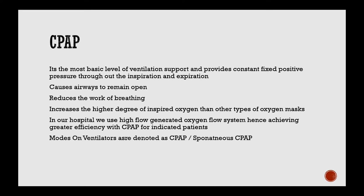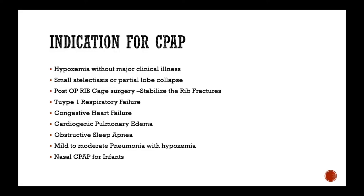In our hospital, we use a high-flow generated oxygen flow system, achieving greater efficiency with CPAP for indicated patients. If ventilation is done by a dedicated mechanical ventilator, CPAP efficiency would be significantly better than smaller machines. CPAP is identifiable on machine screens by its label. Indications include hypoxemia without major clinical illness, small atelectasis or partial lobe collapse, post-op ribcage surgery, rib fracture stabilization, congestive heart failure, cardiogenic pulmonary edema, obstructive sleep apnea, mild to moderate pneumonia with hypoxemia, and nasal CPAP for infants.